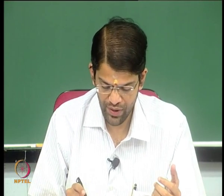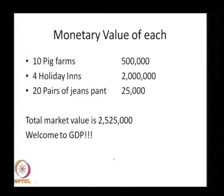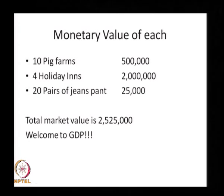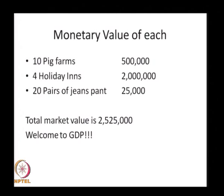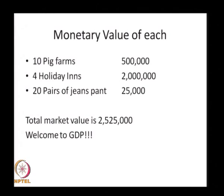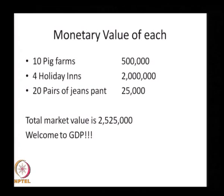Then we need to add monetary value to it. Let us say these 10 pig farms were valued at 500,000, the 4 holiday inns at 2 million, and the jeans at 25,000 — so the total market value is 2.525 million.